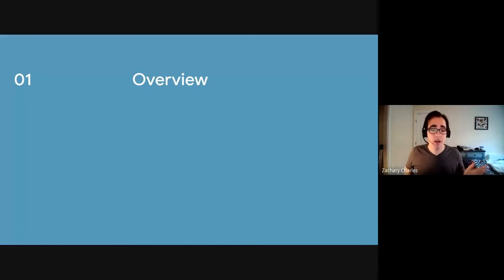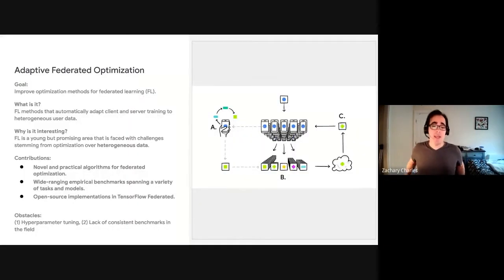First, just an overview of what adaptive federated optimization is all about. Really, the goal of this work stream is to improve optimization methods for federated learning, FL. At a high-level view, what this is about is we want federated learning methods that automatically adapt the client and server training to heterogeneous user data.